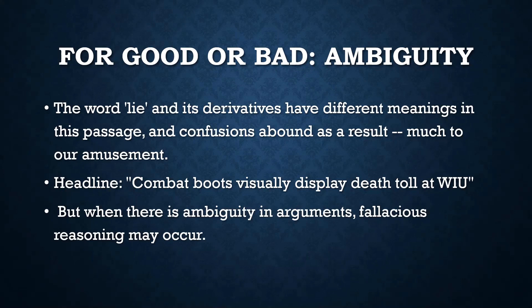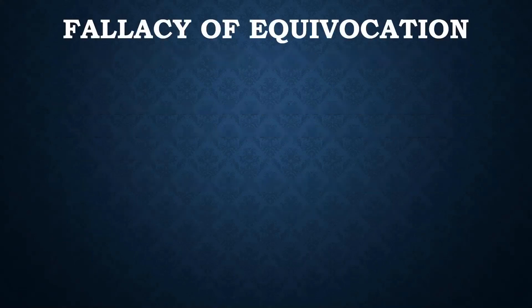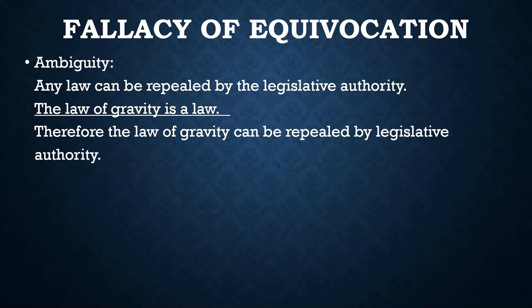When there's ambiguity in arguments and terms are ambiguous, you might end up with fallacious reasoning — a fallacy. We have the fallacy of equivocation. This occurs when a word is used with one meaning in one premise and a different meaning in another premise. For example, this rather silly argument: 'Any law can be repealed by the legislative authority. The law of gravity is a law. Therefore, the law of gravity can be repealed by the legislative authority.' Obviously, the first premise intends 'law' to be restricted to legislative law, not including laws of nature.